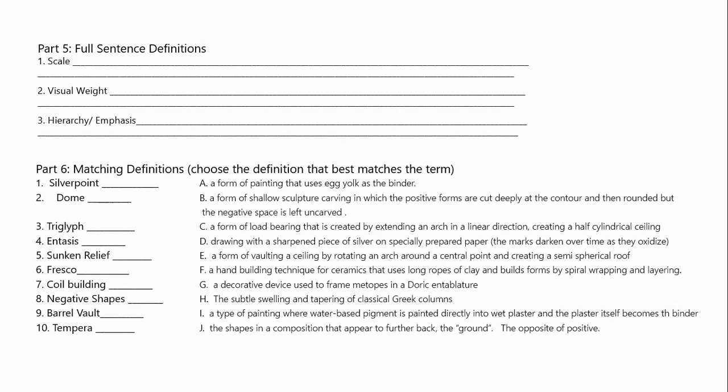For the full sentence definitions: to get full points for your definition of scale, it needs to include both the idea of actual size and the relative proportional size — both of the actual work and of the elements, shapes, or parts of a work. Scale can mean the relative relational scale within a work, or the overall size of the painting or sculpture. Sometimes that's relative — how it feels within a particular space — and sometimes it refers to actual facts, such as the Descent of Christ by Rubens being 13 feet tall.